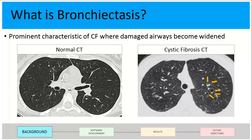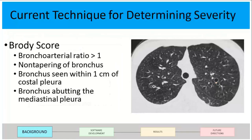This is a CT slice of a normal patient — it's really hard to see the airways and they're very small, which is normal. This is a patient with cystic fibrosis, and the airways — especially this one — are huge and dilated. Someone who has more severe cystic fibrosis will have more bronchiectasis, and their airways will be larger and more visible.